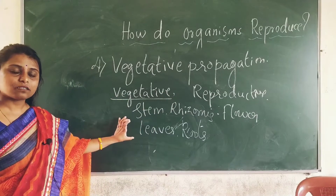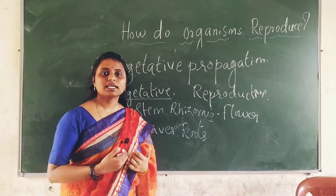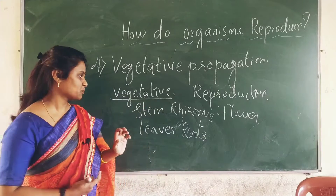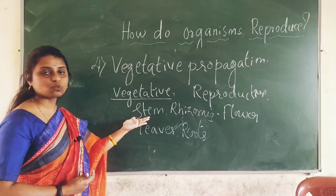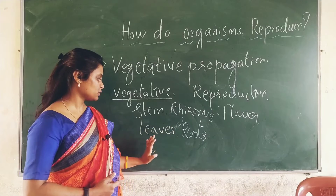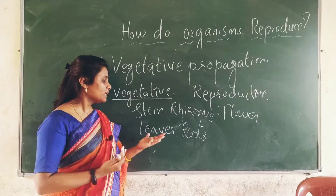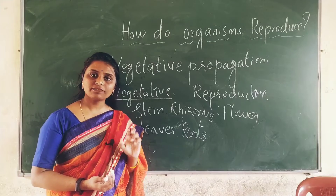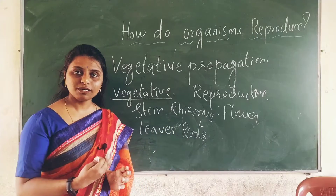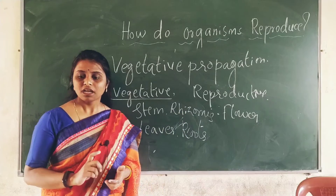These vegetative parts of plants are involved in creating a young one — that is called vegetative propagation. For example, in a rose plant you cut the stems and each stem grows into a full plant. So we propagate rose through stem cuttings, which is also called vegetative propagation. In bryophyllum, leaves will grow into a full plant — leaves are also called vegetative propagules.